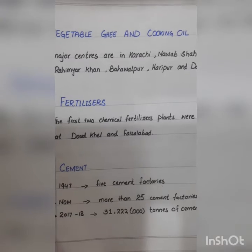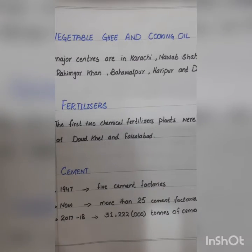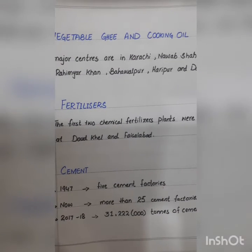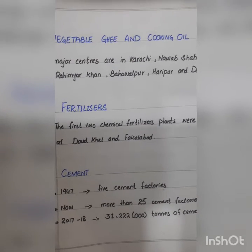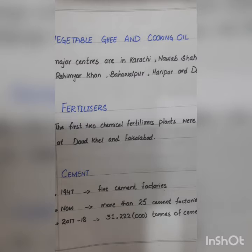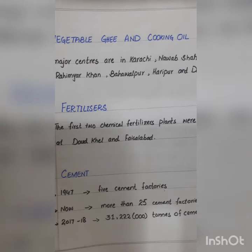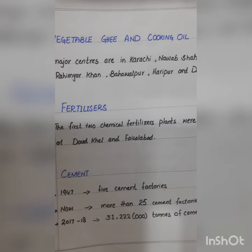Then we have vegetable ghee and cooking oil. The major centers of vegetable ghee and cooking oil are in Karachi, Nawabshah, Rahim Yar Khan, Bahawalpur, Haripur, and Dargai. Then we have the fertilizers industry.